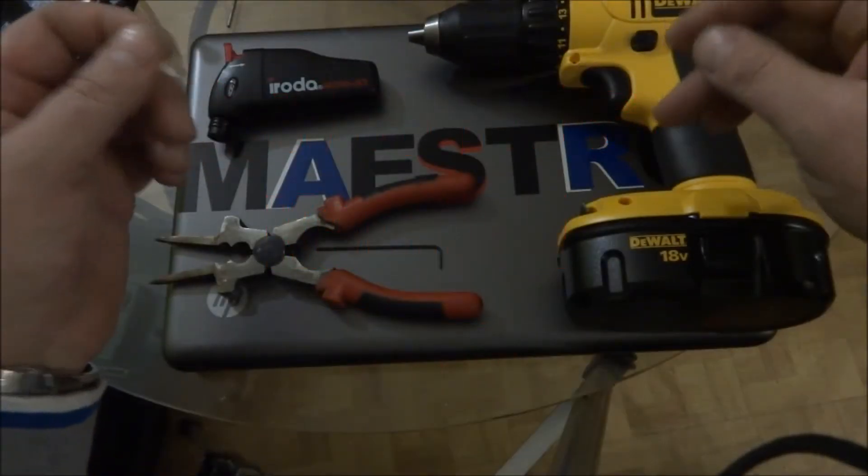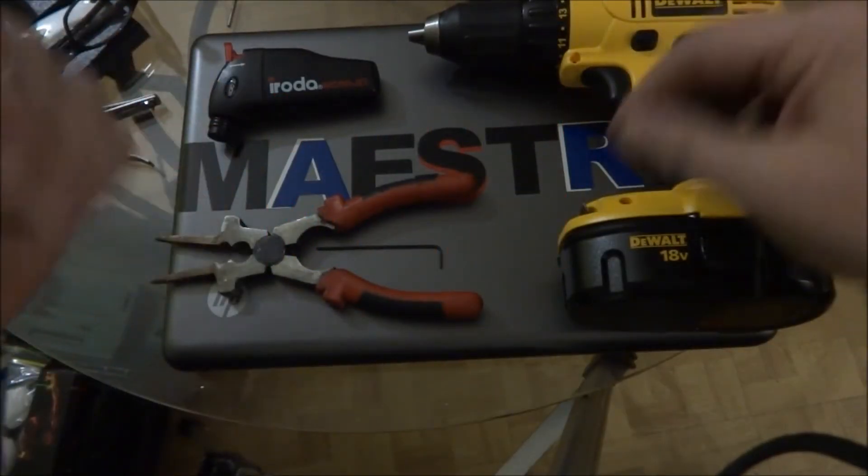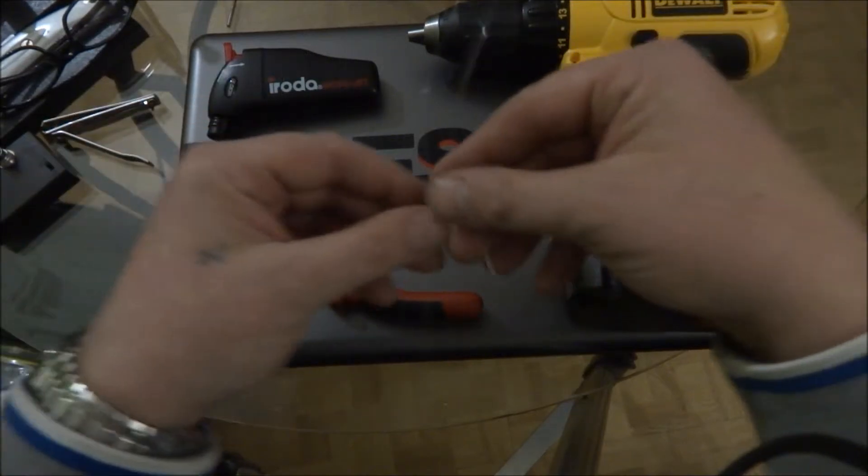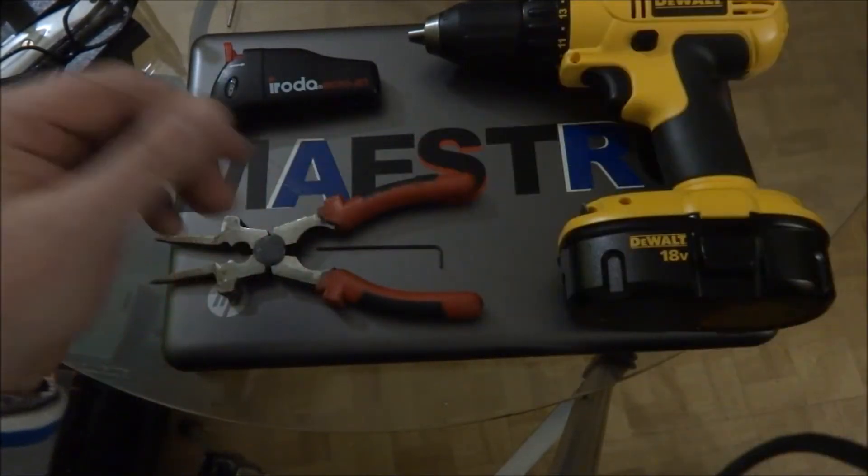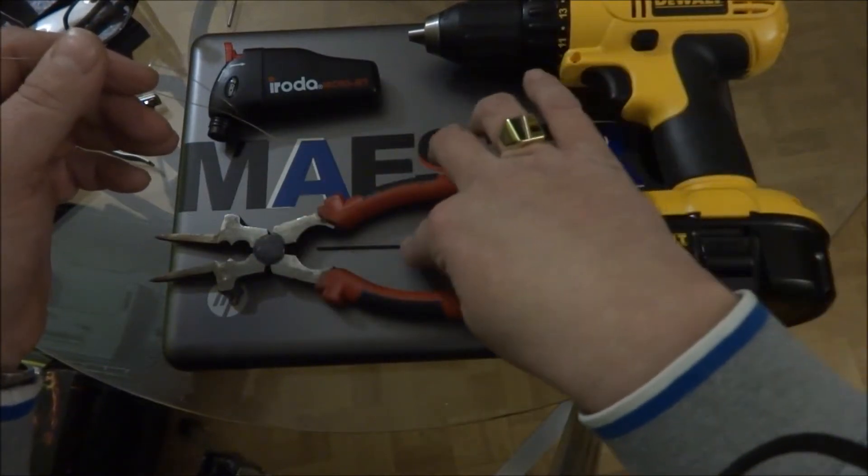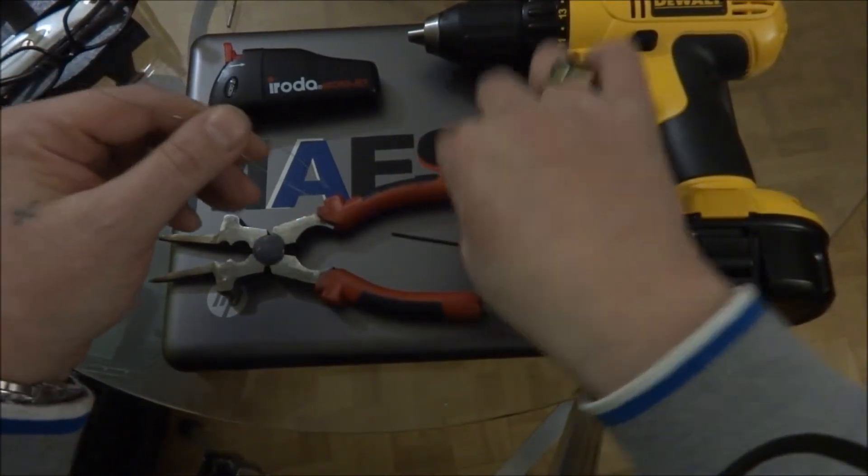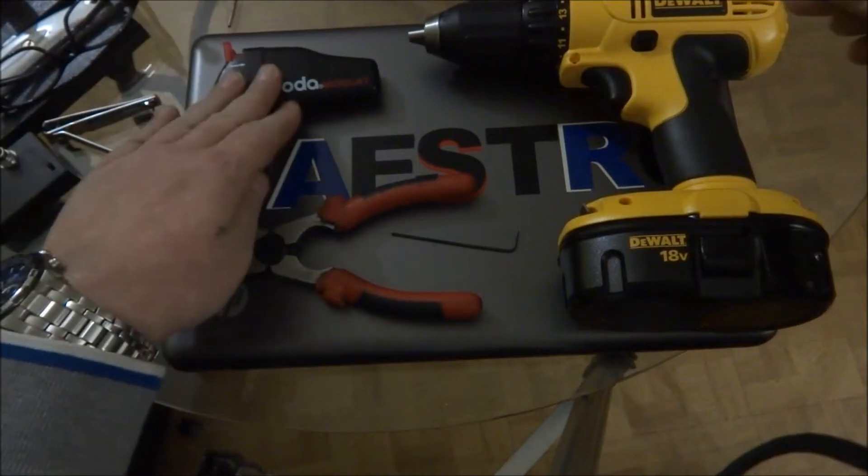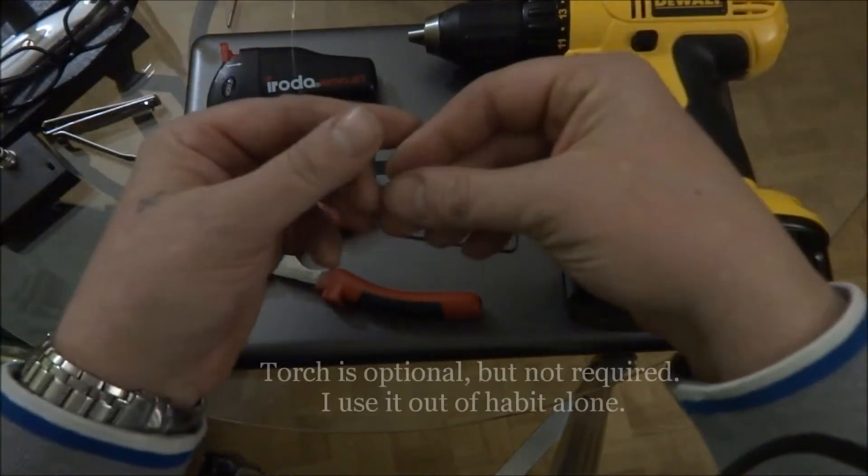How to twist Kanthal wire. First thing you're going to need is some Kanthal wire, you're going to need a drill, you're going to need pliers, an Allen wrench to hold your wire, and a torch to oxidize the wire when you're done.